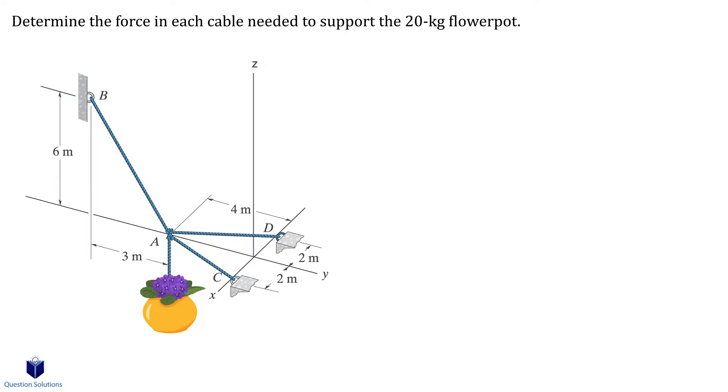Let's draw a free body diagram. We have force from A to B, a force from A to C, and a force from A to D. We also have the weight of the pot which is straight down. So we need to express each of these forces in Cartesian form.